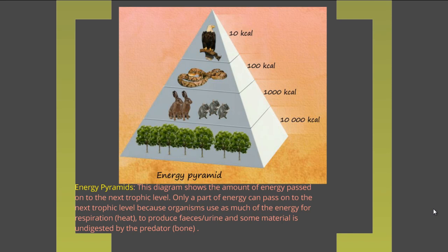Last time we finished off by looking at a pyramid of energy, and we discussed that this is the best of the pyramids. It does not have the problems associated with a pyramid of number, which does not take into account the size of organisms, or the pyramid of biomass, which can be dependent on how quickly organisms reproduce. Energy pyramids are the best because they show energy going directly from one trophic level to another.